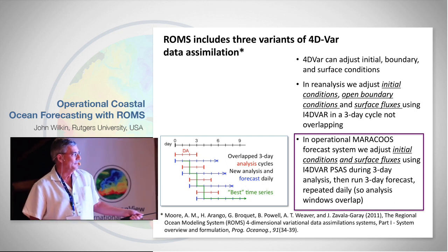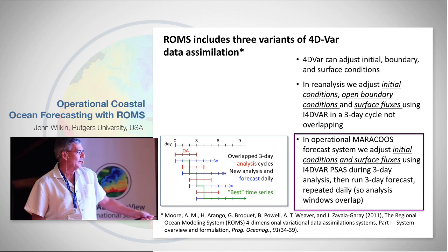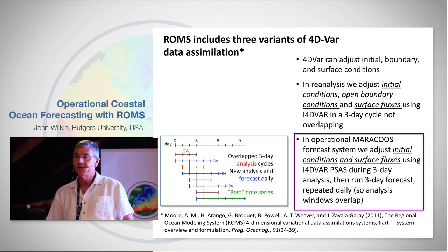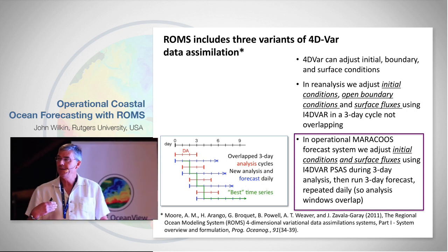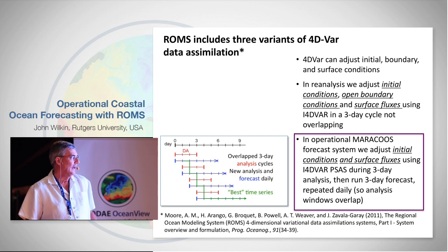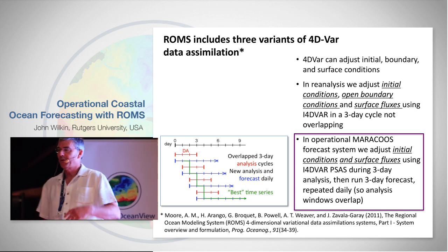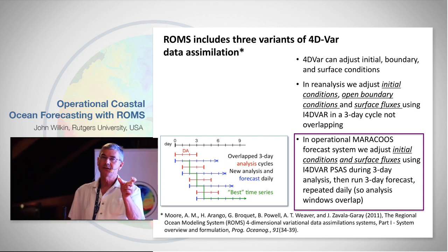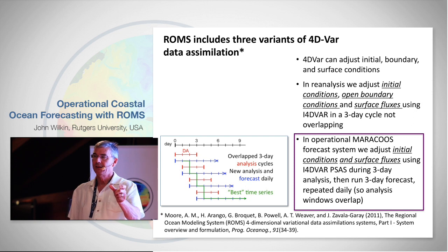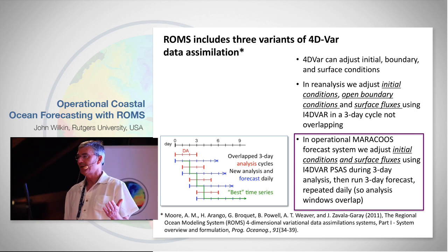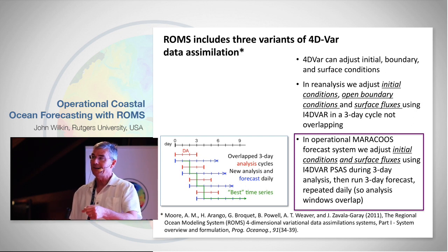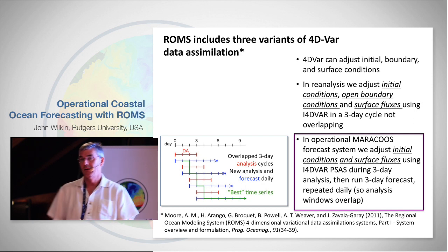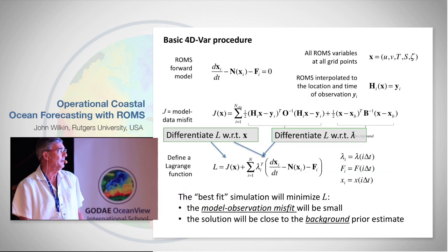We have a three-day analysis interval, and every day we produce a forecast using three days of meteorological forcing. Then we move over one day and do it all again — our data window slides along and the previous two days of data get reused. For retrospective analyses, we take the middle day of each three-day analysis, concatenate them, and put that on a THREDDS server as our best estimate of what the ocean looked like on any given day, always ending with the latest forecast.